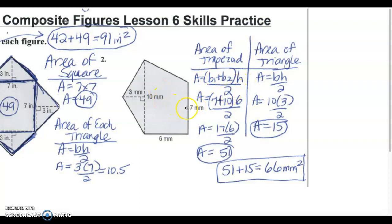The bases are seven and ten. Seven plus ten, seventeen times six divided by two. When I do all that math seventeen times six divided by two I get 51. When I add my two areas together the triangle area plus the trapezoid area 51 plus 15 is sixty six millimeters squared. Area is always expressed in square millimeters.